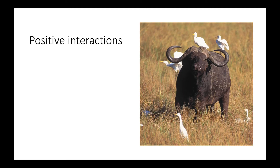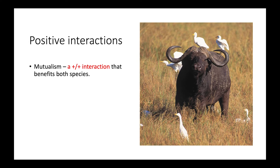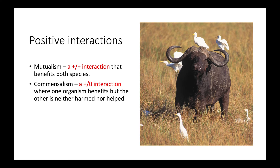Now let's look at positive interactions. Mutualism is a plus-plus interaction in which both species benefit — any interaction where both species receive a positive outcome. Lastly, commensalism is a plus-zero interaction, where one organism benefits and the other is neither helped nor harmed.